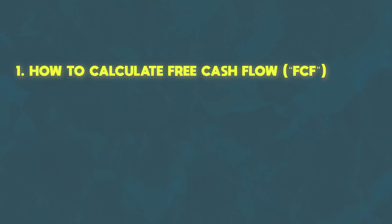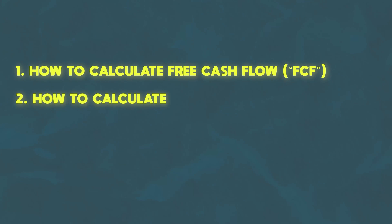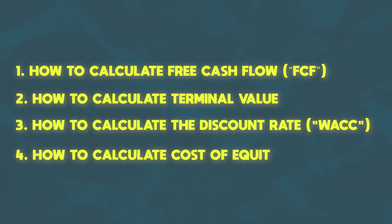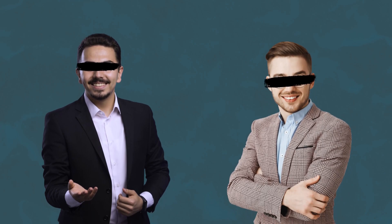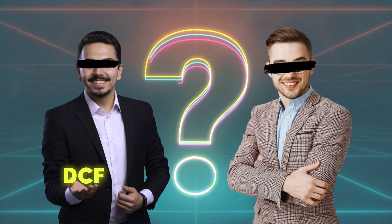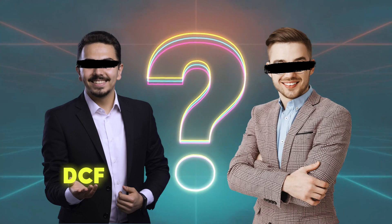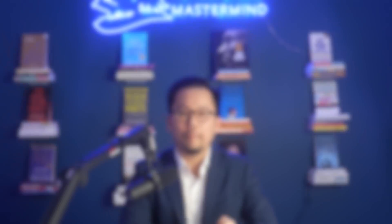For example, you have to know: one, how to calculate free cash flow; two, how to calculate terminal value; three, how to calculate the discount rate, also known as WACC or weighted average cost of capital; and four, how to calculate cost of equity, which includes things like CAPM and beta. So when a banker asks you to walk them through a DCF, it's really a question with a bunch of different concepts all rolled up into one. And that's what makes it tricky.